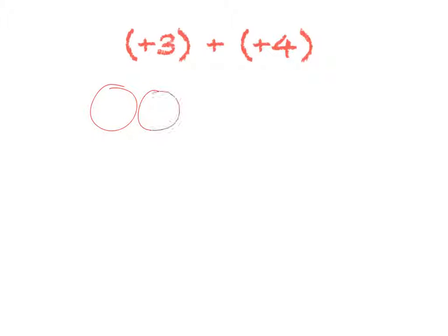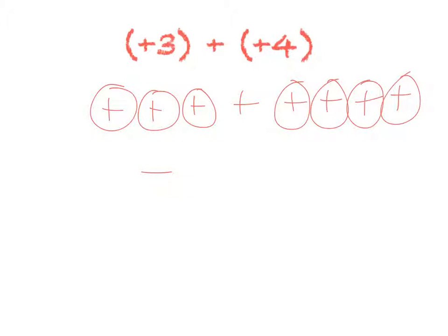Well we say positive one, two, three counters. Put my little plus sign in there plus one, two, three, four more positive counters. Because there's no negative counters involved I can literally just count them all up and that equals positive seven. Why? Because there are one, two, three, four, five, six, seven positive counters. Easy right?